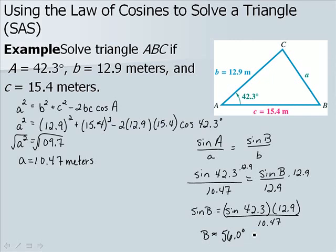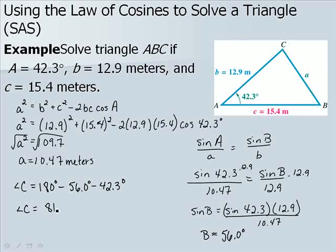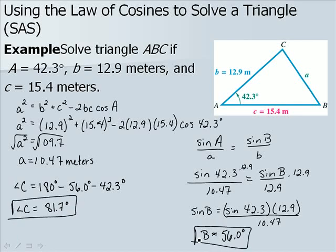Now that we know angles A and B, we can find angle C by taking 180 degrees minus the other two angles. When we work this out, we get a value for C of 81.7 degrees. So here we've solved our triangle.